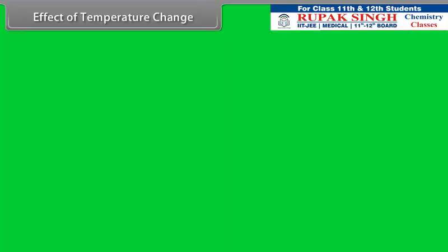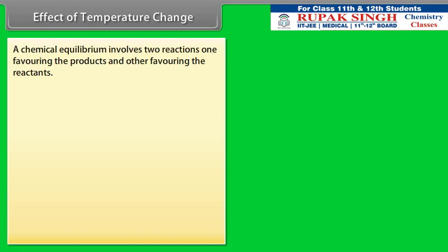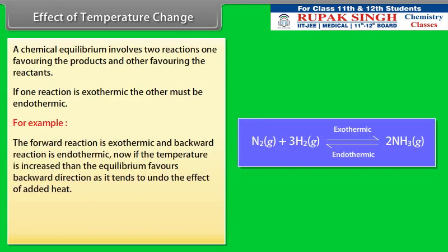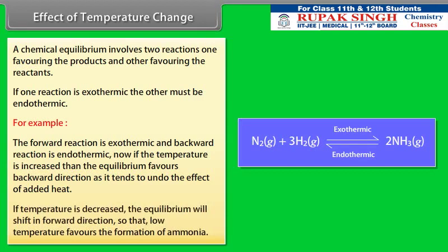Effect of Temperature Change: A chemical equilibrium involves two reactions — one favoring the products and the other favoring the reactants. If one reaction is exothermic, the other must be endothermic. For example, if the forward reaction is exothermic and the backward reaction is endothermic, then if the temperature is increased, the equilibrium favors the backward direction as it tends to undo the effect of added heat. If temperature is decreased, the equilibrium shifts in the forward direction. So, low temperature favors the formation of ammonia.